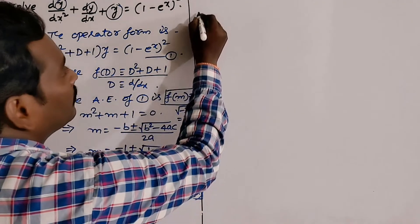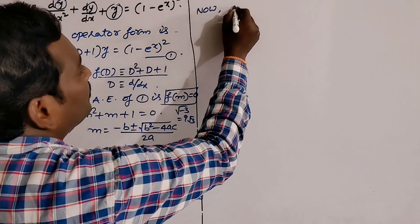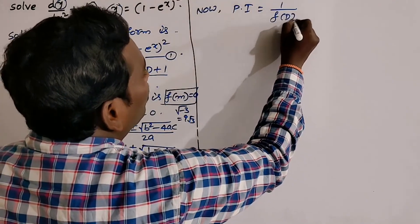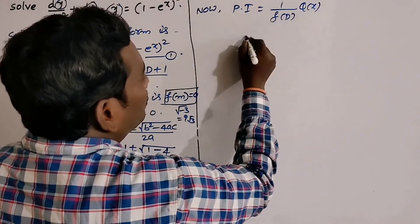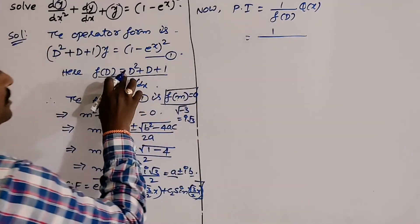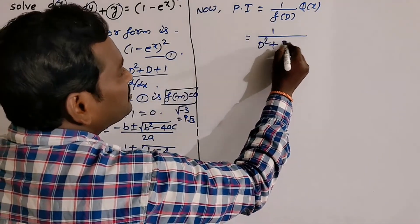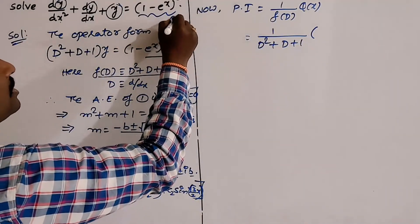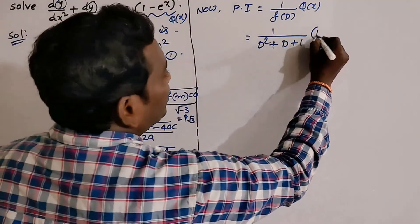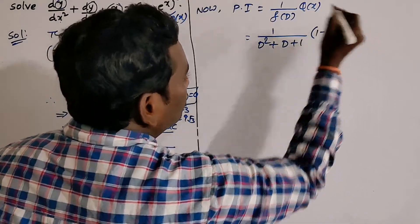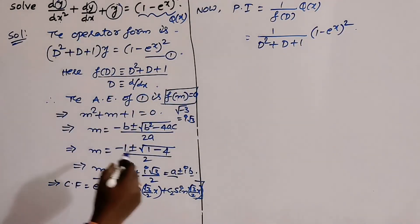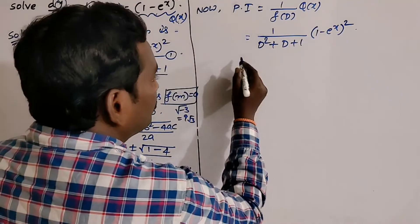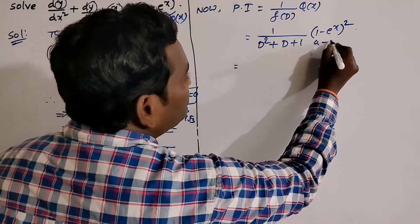Now find the particular integral (PI). PI = (1/f(D)) · Q(x), where Q(x) is the right-hand side function. So PI = 1/(D² + D + 1) · (1 − eˣ)². First, expand (1 − eˣ)² using the formula (a − b)² = a² − 2ab + b².